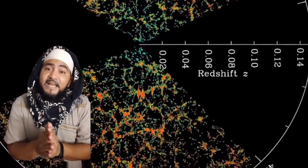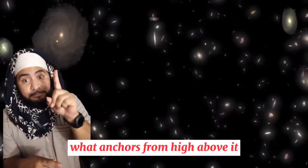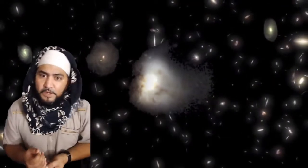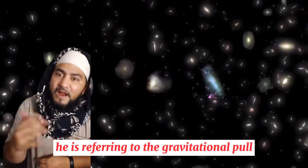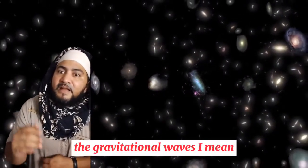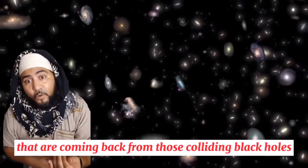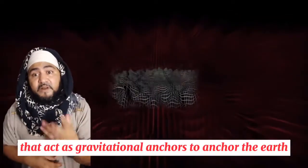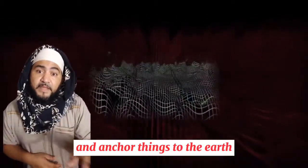When God says he made in the earth what anchors from high above it, he is referring to the gravitational pull, the gravitational waves I mean, that are coming back from those colliding black holes in space that act as gravitational anchors to anchor the earth and anchor things to the earth.